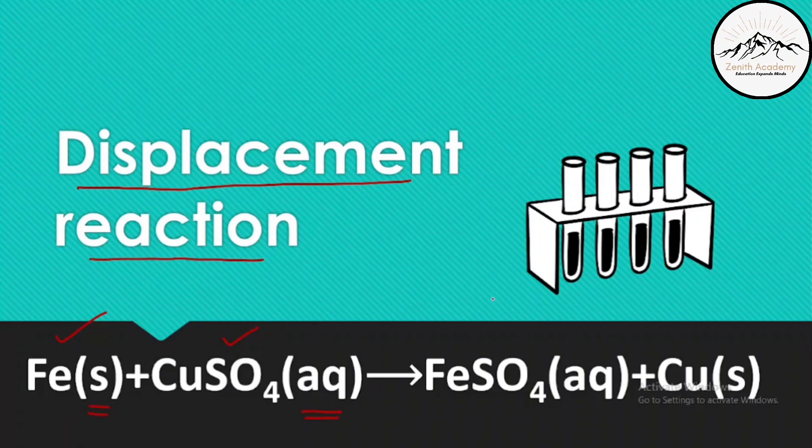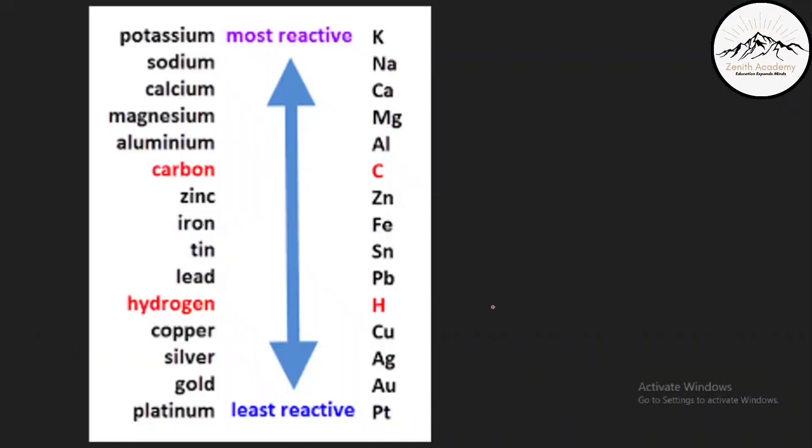Before starting the reaction, let me first tell you what is a reactivity series. So this is the reactivity series of metal and here if we see where is iron and copper.